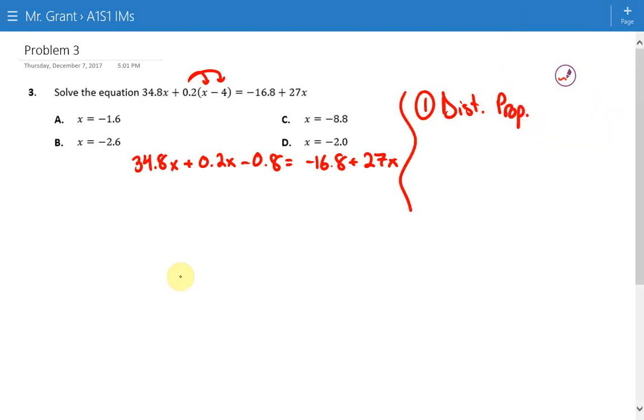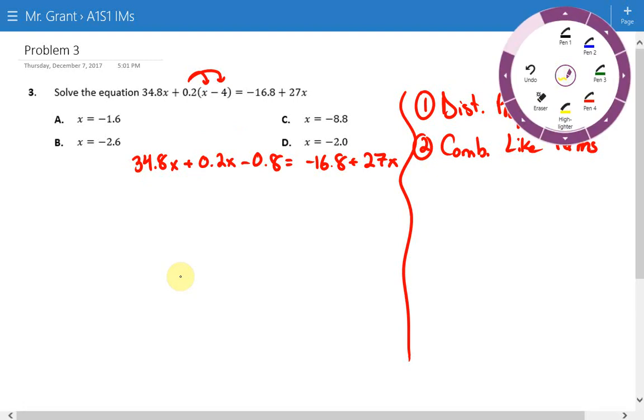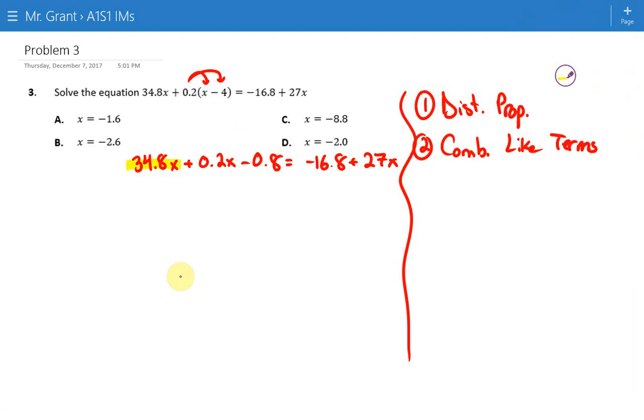After distributive property, we want to combine like terms. When you combine like terms, we're only looking on each side of the equal sign separately. We have three terms here, two of them are like each other. We combine 34.8x and 0.2x together, which gives us 35x - 0.8 = -16.8 + 27x.